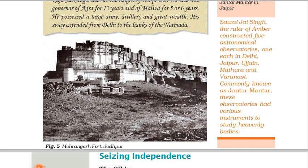Sawai Jai Singh, the ruler of Amber, constructed five astronomical observatories — one each in Delhi, Jaipur, Ujjain, Mathura and Varanasi. Commonly known as Jantar Mantar, these observatories had various instruments to study heavenly bodies.